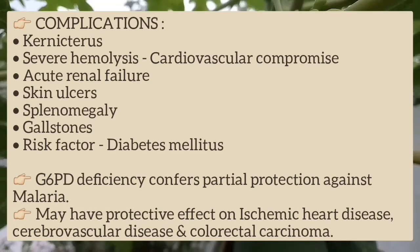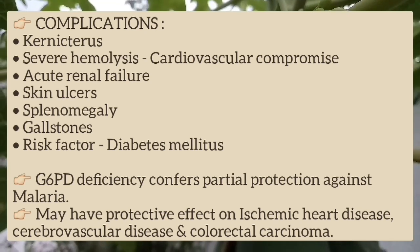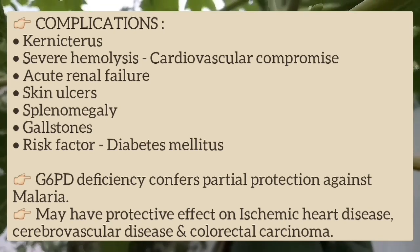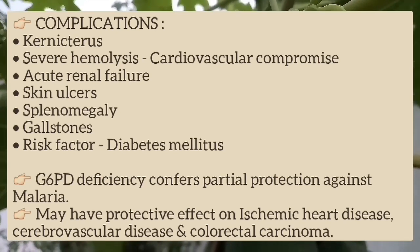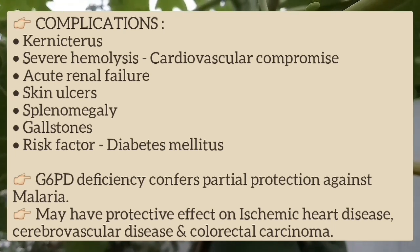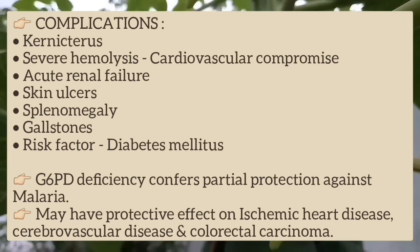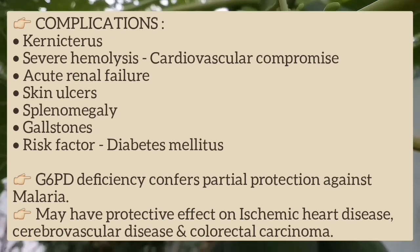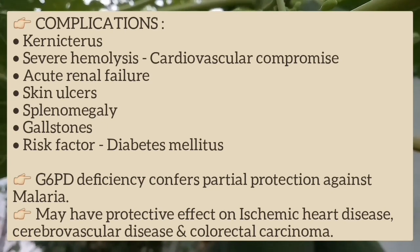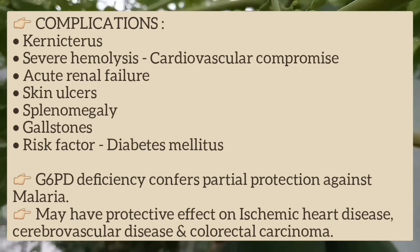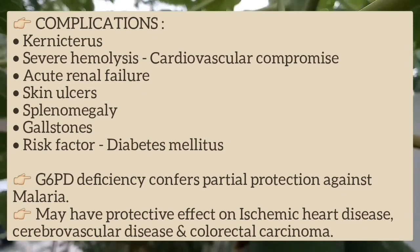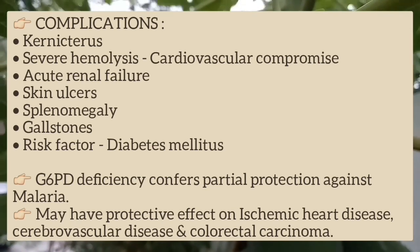Kernicterus is a risk for infants with significant hyperbilirubinemia. Episodes of acute hemolysis in older children may be life-threatening and can lead to cardiovascular compromise or acute renal failure. Skin ulcers are an infrequent complication in patients with severe G6PD deficiency. Splenomegaly and cholelithiasis may be associated with chronic hemolysis. G6PD deficiency appears to be a risk factor for diabetes mellitus, but it confers partial protection against malaria and may have a protective effect on ischemic heart disease, cerebrovascular diseases, and colorectal carcinoma.